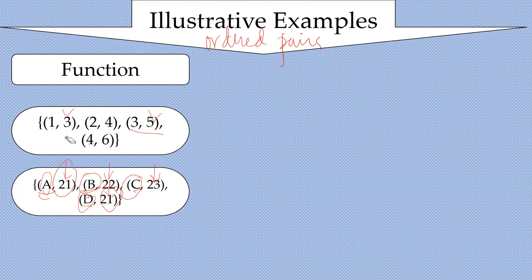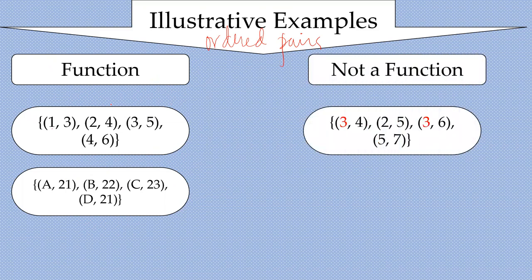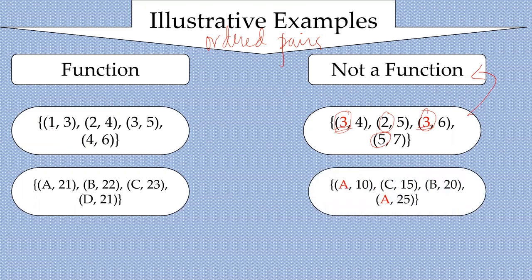Now, what makes it NOT a function? Checking the domains 3, 2, 3, 5 — the number 3 is repeated a second time. That's why it is not a function. The second example: checking the domain A, C, B, A — the letter A appears twice. Therefore, it's not a function.